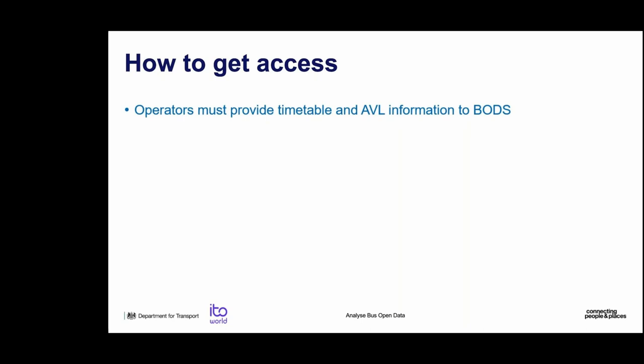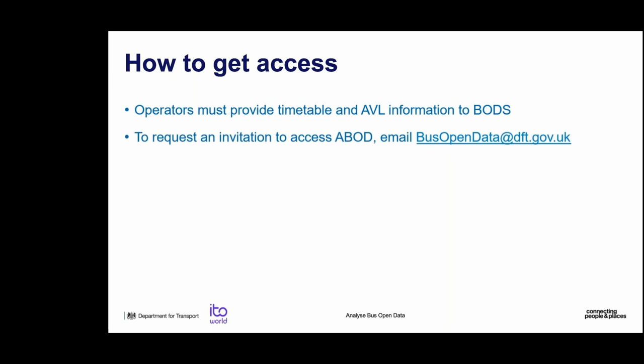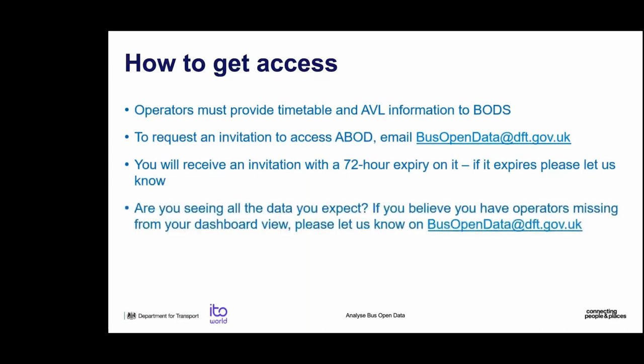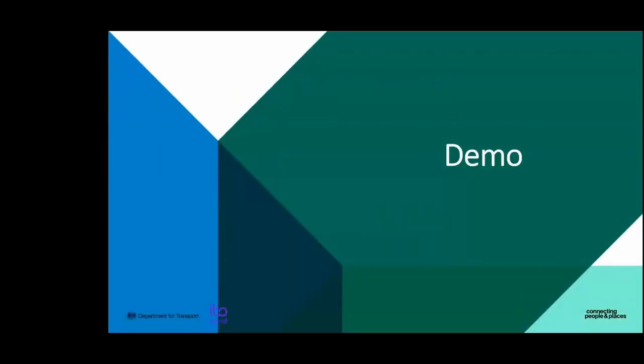So how do you get access? Firstly, operators must provide timetable and AVL information to BODS. There will be an email address shown if there are any problems with the organization view or if you need to request access to the service. You'll receive an invitation that is active for 72 hours due to security reasons - it can't be any longer than that. If for whatever reason it expires before you've been able to accept, just send an email to Bus Open Data and we will send another one through. If there are any issues such as resetting your password or not being able to log back in, we can fix that for you as well.